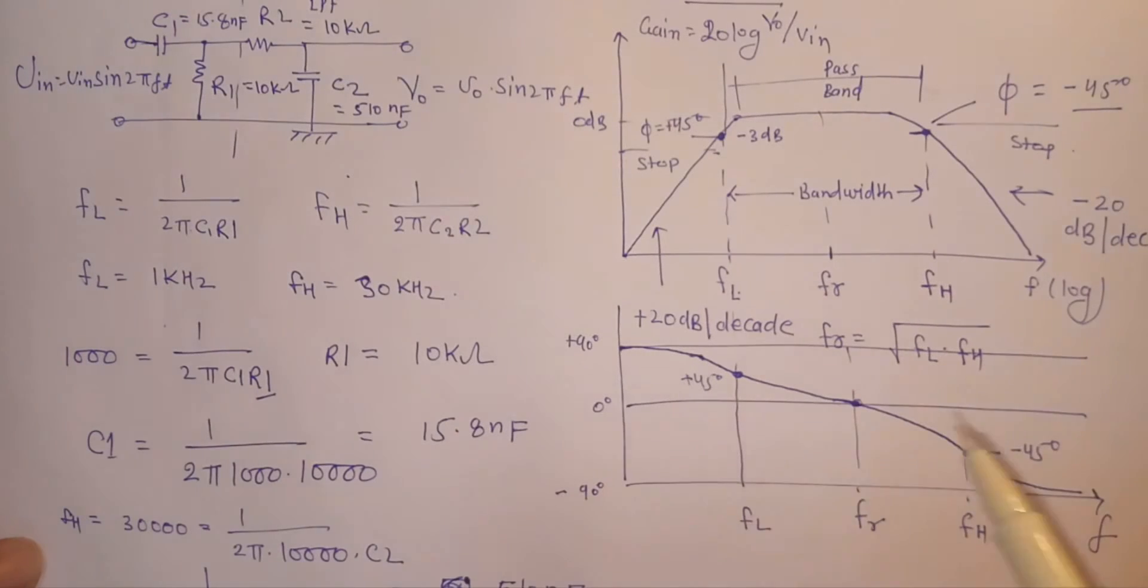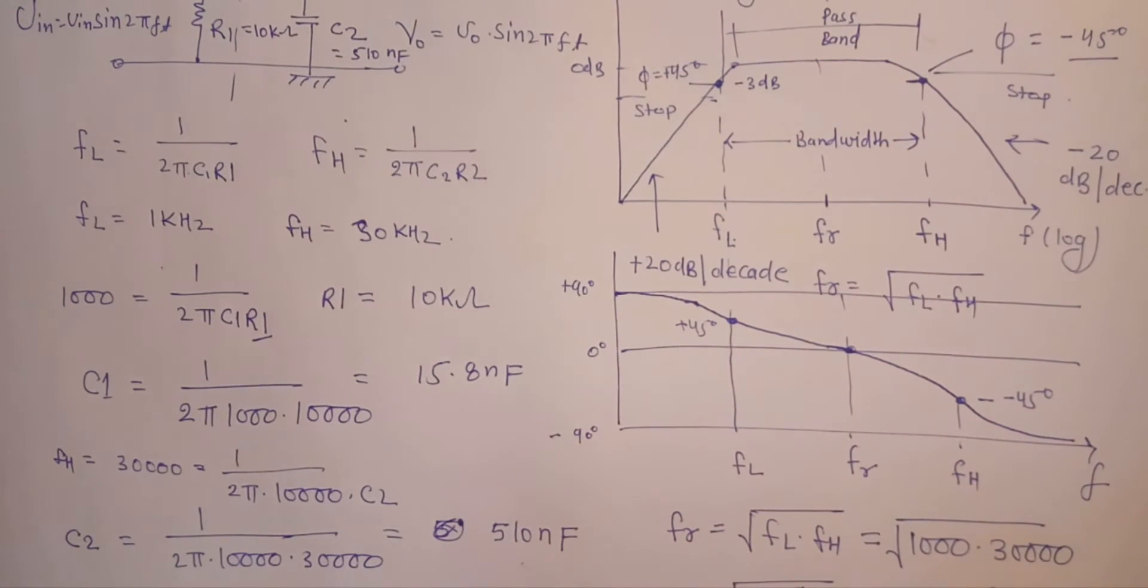We can get FR by taking the square root of FL and FH together. So FR equals the square root of 1000 times 30000, which equals the square root of 3 times 10^7. This gives us the square root of 30 times 10^3, which is approximately 5 point something kilohertz.